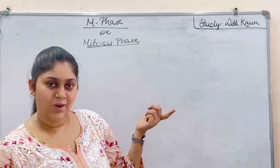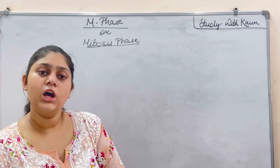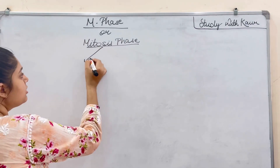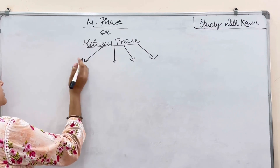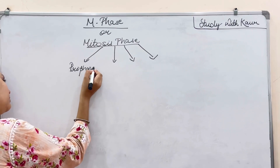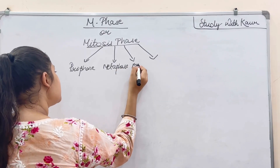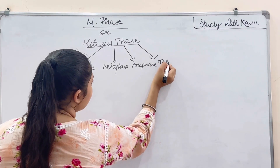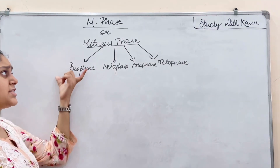Now let's start with the M phase of mitosis. In M phase, karyokinesis takes place, which is division of the nucleus. M phase is divided into four sub-phases: prophase, metaphase, anaphase, and telophase. Now let's start with prophase.